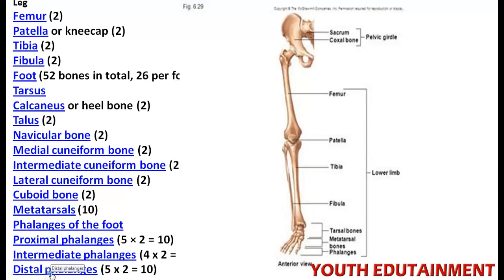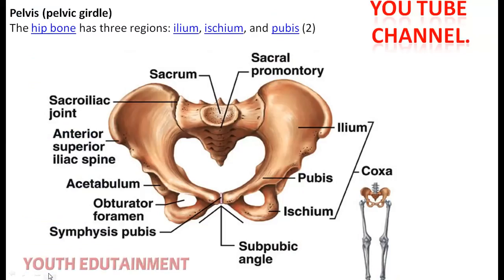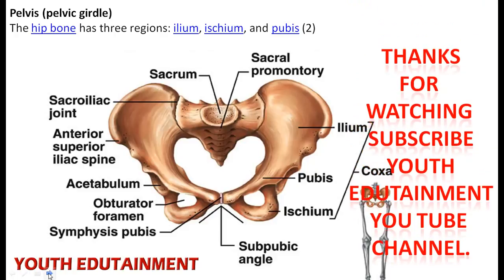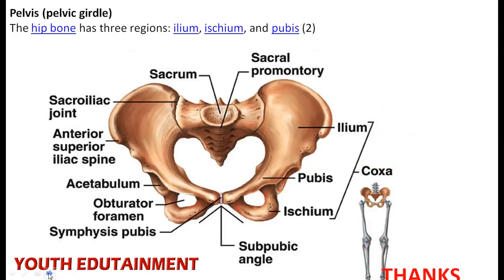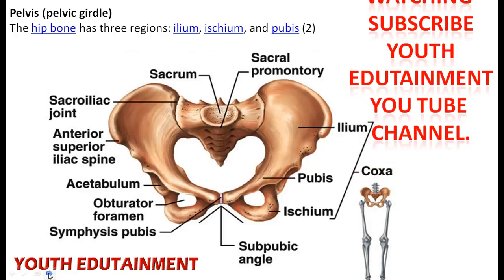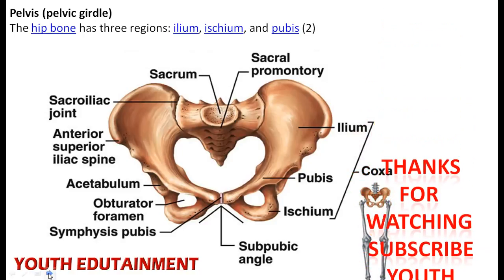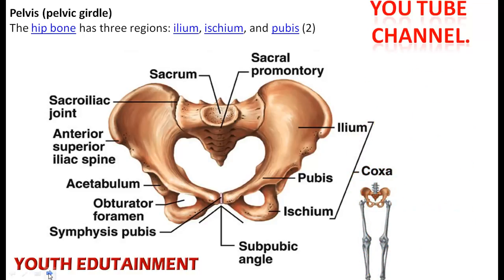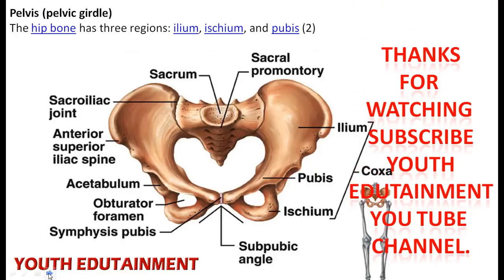The leg bones include the femur, patella, tibia, and foot bones such as tarsals and the talus. Next, the pelvic girdle: the hip bone has three regions — the ilium, ischium, and pubis.